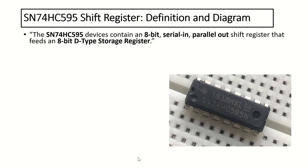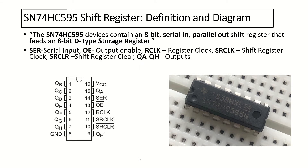The SN74HC595 shift register is an 8-bit serial in parallel out shift register that feeds an 8-bit D-type storage register. Looking at the pin definitions: SER stands for serial input, OE stands for output enabled, RClock is register clock, SRClock is shift register clock, SRClear is shift register clear, and QA to QH are the outputs. The output enabled and shift register clear pins are active low, meaning you have to connect pin 13 to ground to enable output, and connect pin 10 to VCC to avoid clearing the shift register's content.